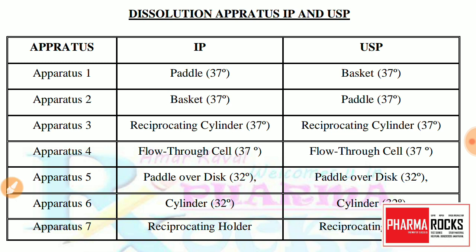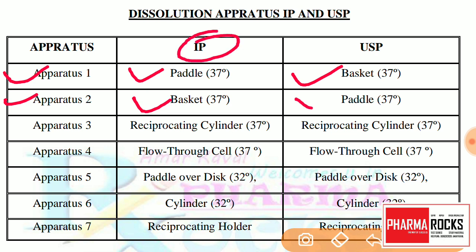Let's check with the sequence. Dissolution test apparatus 1 as per the IP is a paddle type, while in the USP it is a basket type. In bracket it is mentioned 37, which means it is the temperature we have to maintain in a Dissolution test apparatus. Apparatus 2 is the basket type as per the IP, while it is a paddle type as per the USP.